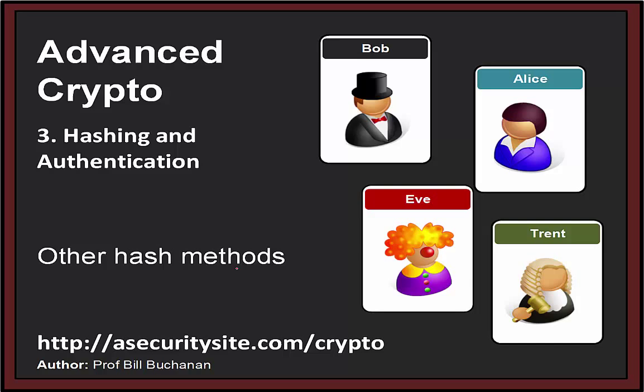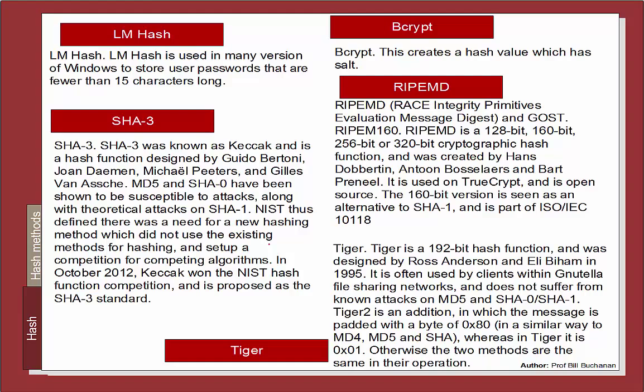There are lots of other hashing methods used in practical implementations. The LM hash is used in Windows. SHA3 is a new hashing method created in 2012 and standardized by NIST, using a new way of computing the hash signature. We have bcrypt, which has salting integrated into it, and then RIPEMD, which is used within TrueCrypt.